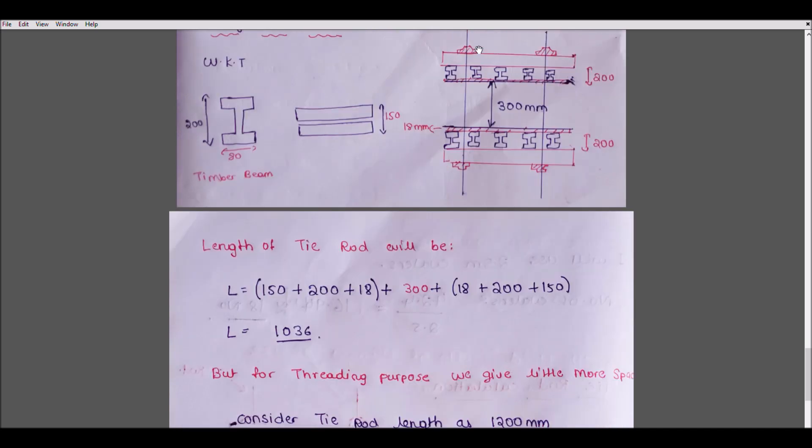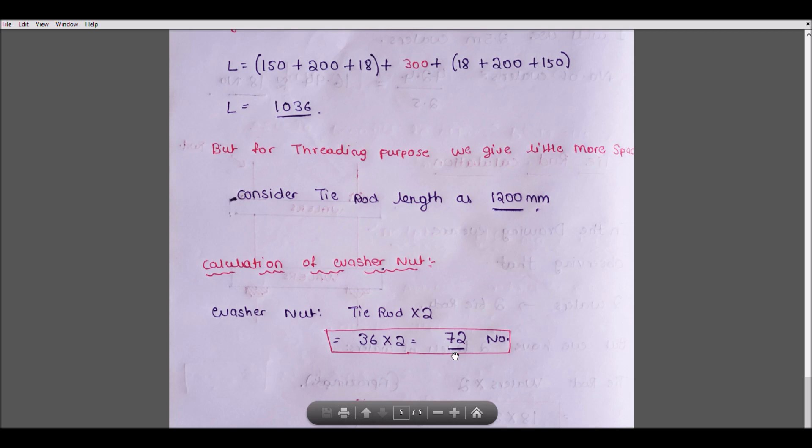For this, we require plate nuts. For one tie rod, we are using two plate nuts, so multiply by two to get 72 numbers. If you have any doubt, please mention in the comment box. If you like the video, please share and subscribe. Thank you, have a good day.